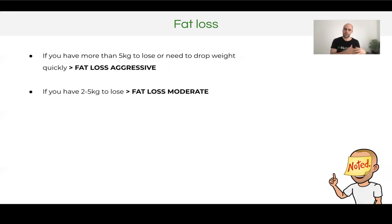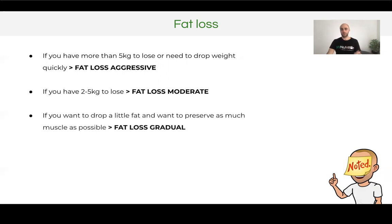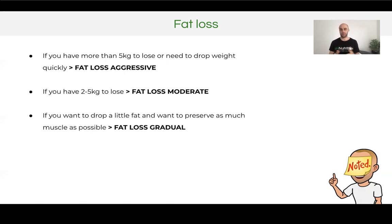If you have two to five kilos to lose, or you've been dieting for a while and need to lose a bit more, or you're just starting, a moderate deficit is probably where you need to be. If you want to drop fat and preserve as much muscle mass as possible, then gradual is your goal. The more aggressive your diet, the more at risk you are for losing muscle mass. A gradual diet is a lot easier to maintain muscle mass, and if you have a little bit longer or just one kilo to lose, gradual gives you more food, more energy, more protein, and is more sustainable.